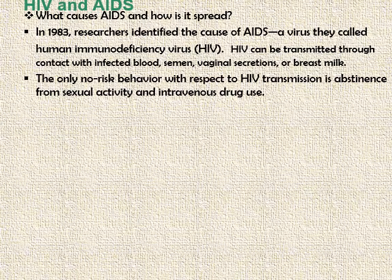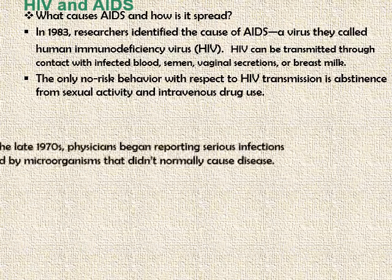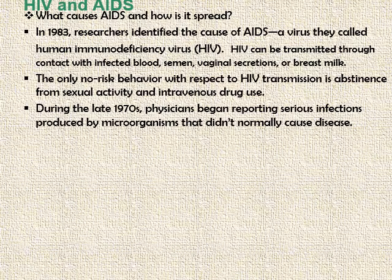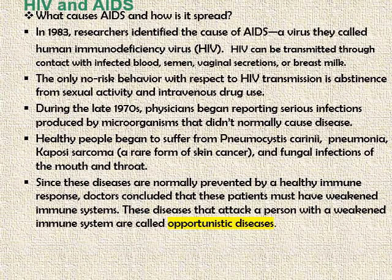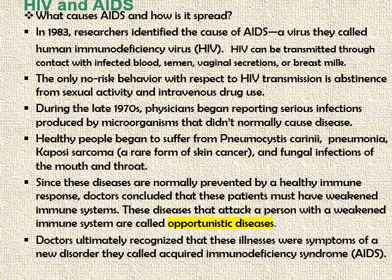The only no-risk behaviour with respect to HIV transmission is abstinence from sexual activity and intravenous drug use. During the late 1970s, physicians began reporting serious infections produced by microorganisms that did not normally cause diseases. Healthy people began to suffer from Pneumocystis carinii pneumonia, Kaposi sarcoma — a rare form of skin cancer — and fungal infections of the mouth and throat. Since these diseases are normally prevented by a healthy immune response, doctors concluded that these patients must have weakened immune systems. These diseases that attack a person with a weakened immune system are called opportunistic diseases. Doctors ultimately recognized that these illnesses were symptoms of a new disorder called Acquired Immunodeficiency Syndrome, abbreviated as AIDS.